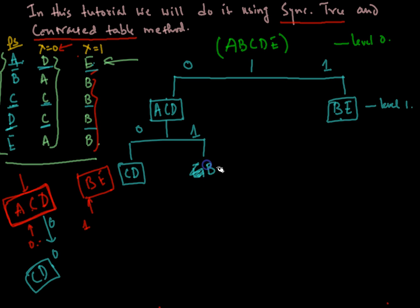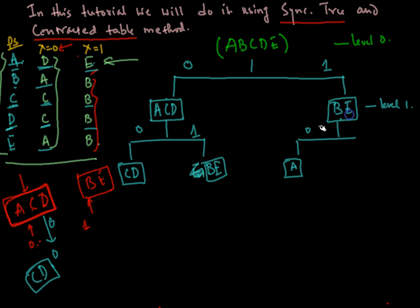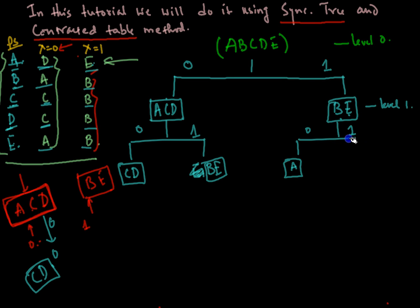For {B,E} on input 0: B goes to A and E also goes to A, so it reduces to just {A}. For {B,E} on input 1: E goes to B and B also goes to B, so it reduces to just {B}. Both B and E go to A on 0, and both go to B on 1.